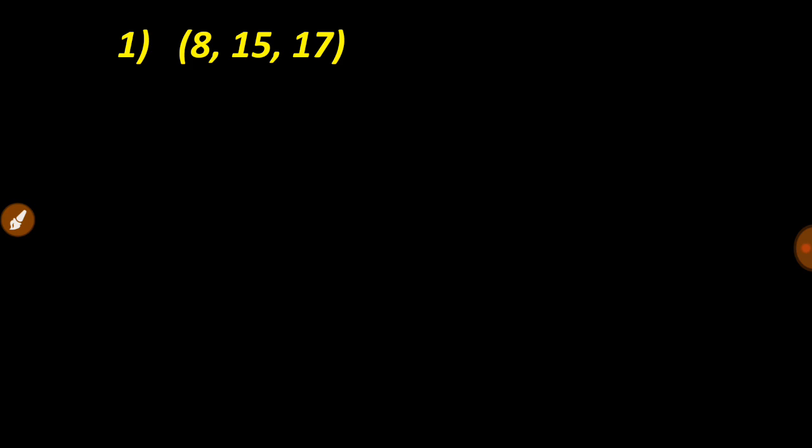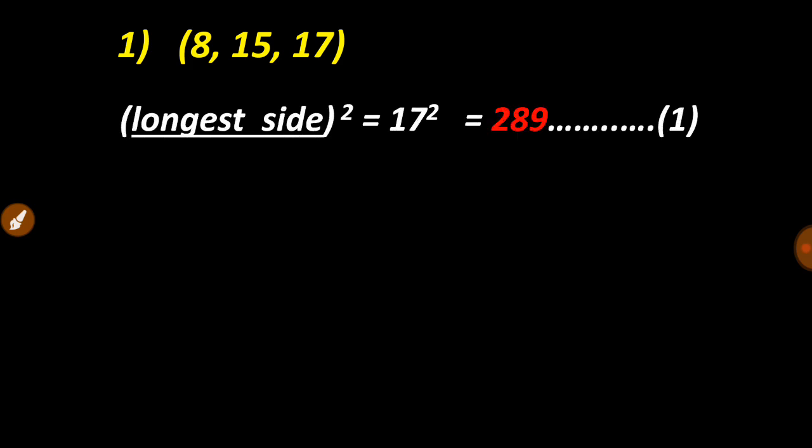Very first, among these three sides we have to choose the longest side and find the square of it. Over here we have 17 as the longest side, and the square of it is 289.